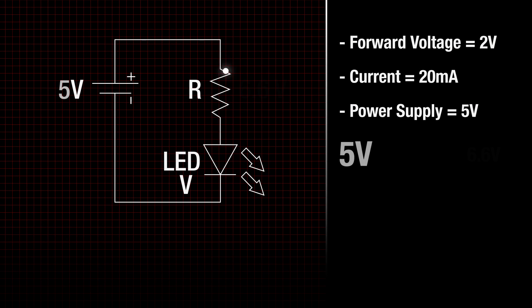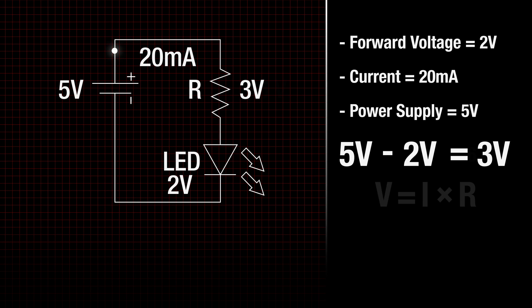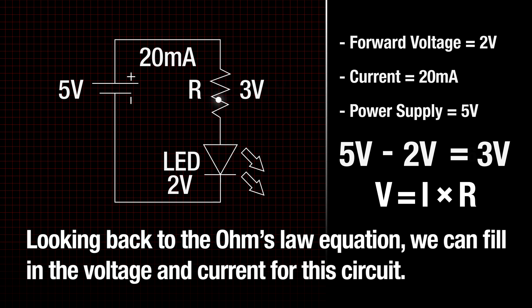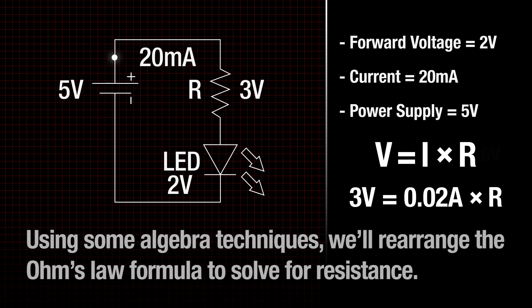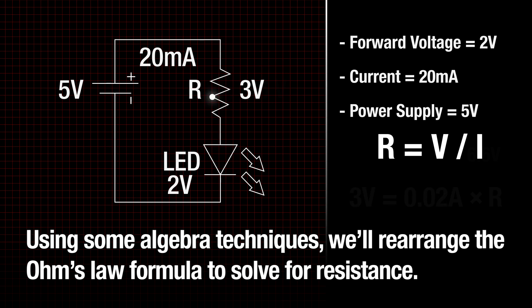Starting with our source voltage of 5 volts, we'll subtract our LED's forward voltage of 2 volts, leaving 3 volts to drop across the resistor. Because the resistor and LED are in series, we know that 20 milliamps will pass through both the resistor and the LED. Looking back to the Ohm's Law equation, we can fill in the voltage and current for this circuit. Using some algebra techniques, we'll rearrange Ohm's Law to solve for resistance.